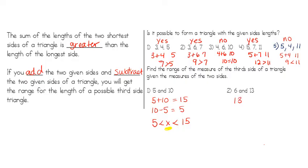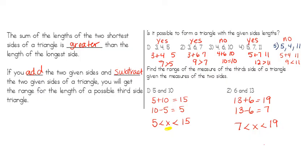So we write it as: x is greater than five and less than fifteen. Let's try another: add the two sides to get the upper limit — can't be 19 — and subtract to get the lower limit of seven. So the third side x is greater than seven and less than nineteen. To summarize: your two shortest sides must sum to greater than the longest side; to find the range of a missing third side, add and subtract your two given sides.